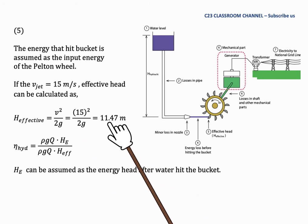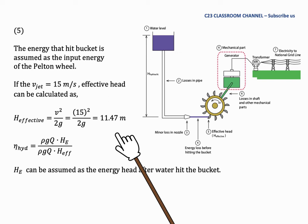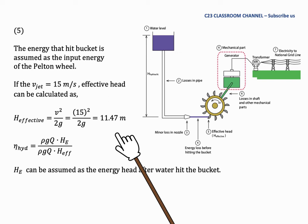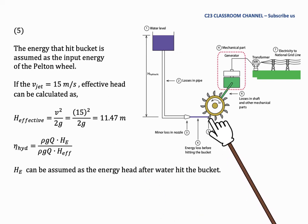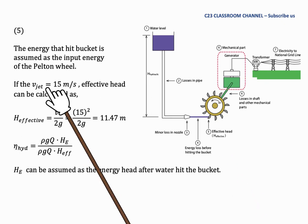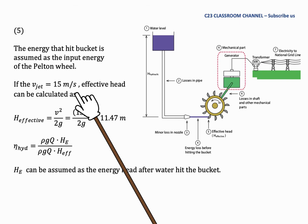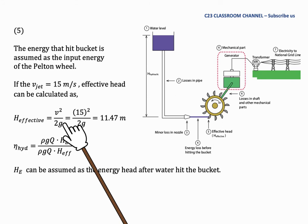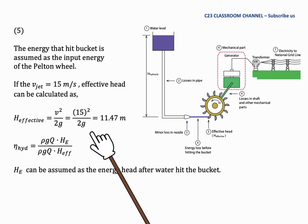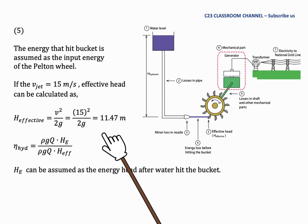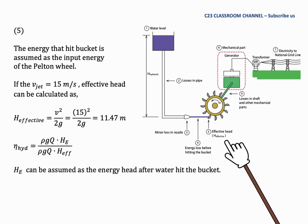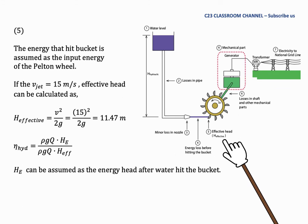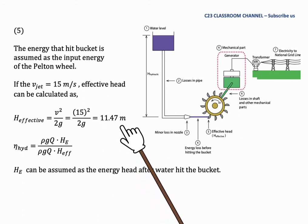The energy of the jet hitting the bucket is assumed to be the input energy of the Pelton wheel. For example, if the velocity of the jet hitting the bucket is 15 m/s, the effective head can be calculated as V²/2g. Substituting V = 15 m/s gives an effective head of 11.47 meters.